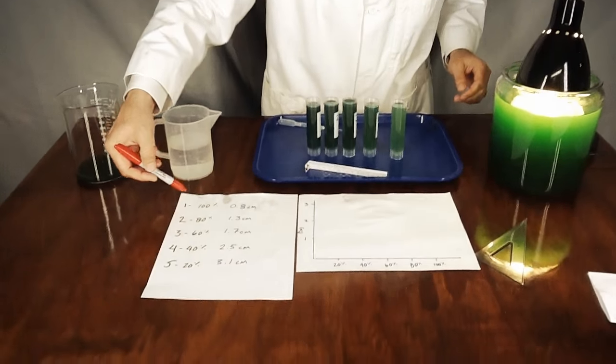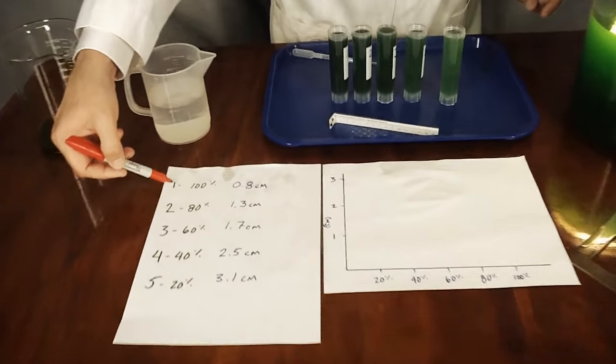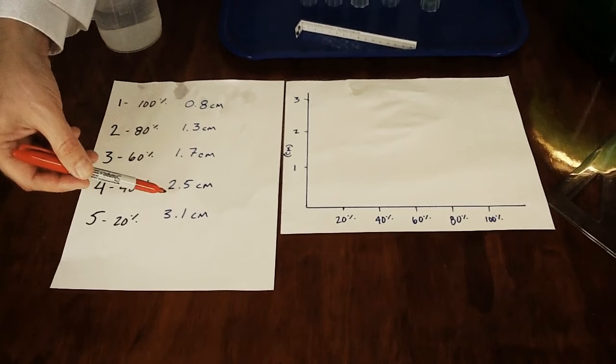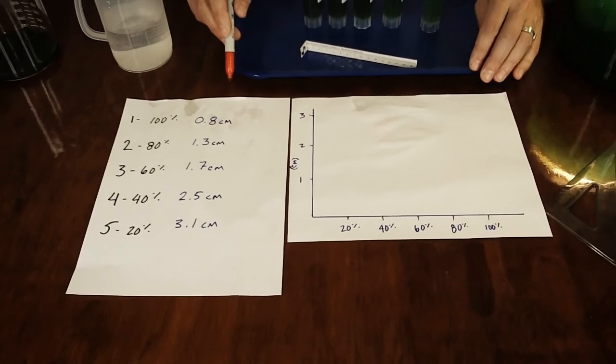Alright, let's write those numbers down. Put our data down here. So in each one of our tubes, I have them labeled one through five: 100%, 80%, 60%, 40%, and 20%, and here's the Secchi disk depth. Now let's go ahead and mark each one of the depths.